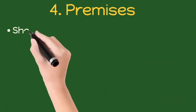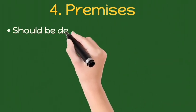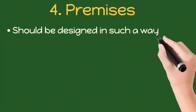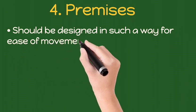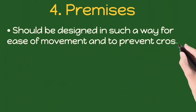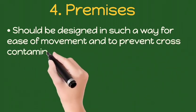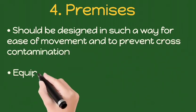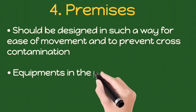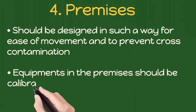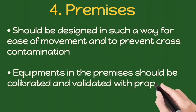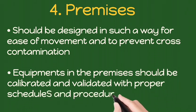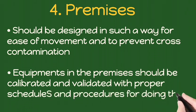Premises: 1. Should be designed in such a way to allow ease of movement and to prevent cross-contamination. 2. Equipment in the premises should be calibrated and validated with proper schedules and procedures for doing the same.